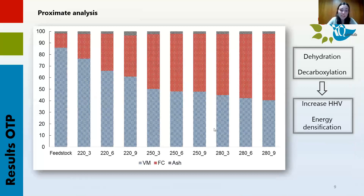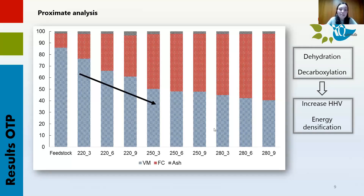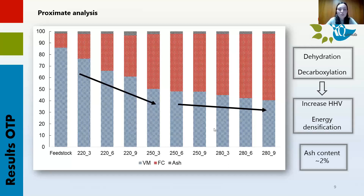As far as proximate analysis is concerned, there is a clear trend with severity: a decrease in volatile matter and an increase in fixed carbon. The enhancement of fixed carbon is basically due to dehydration and decarboxylation reactions in the process, and this is related to the increase in higher heating value and the energy densification in the hydrochar. Until reaching the 250 degrees and three hour test, the decrease in volatile matter is more pronounced. Regarding ash content, this presents values of around two percent, which is interesting since this low content avoids operating problems in boilers during combustion.